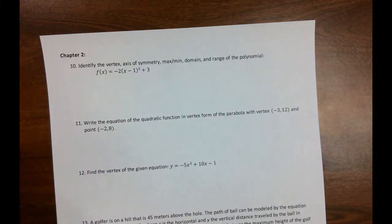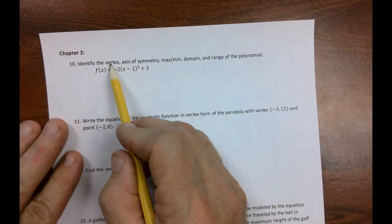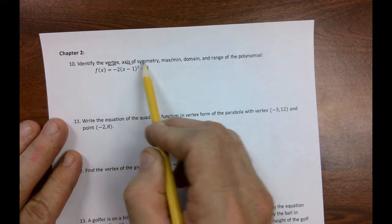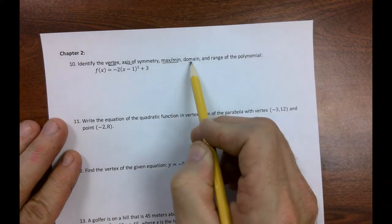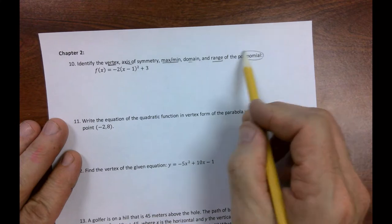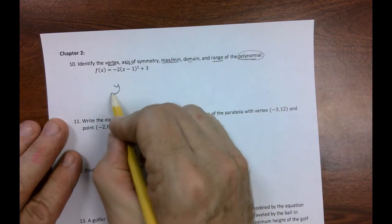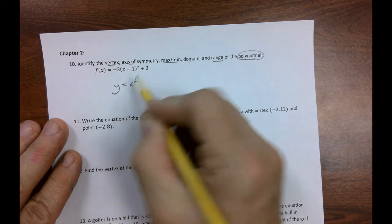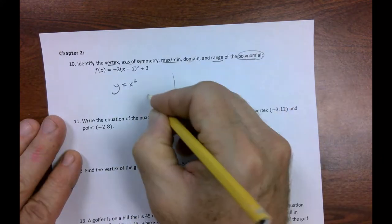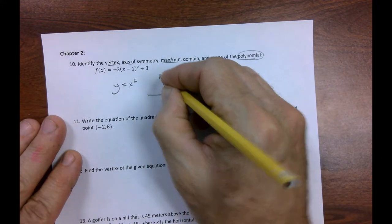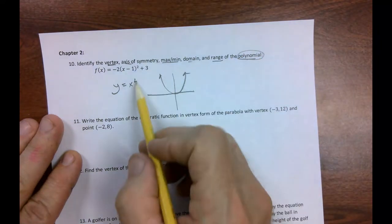All the way up to number 10. Identify the vertex, axis of symmetry, max or min, domain and range of the polynomial. Now, if you take a quick glance, you should be able to see that the parent function is y equals x squared. So your brain should go, aha, I know it's some transformation of this.